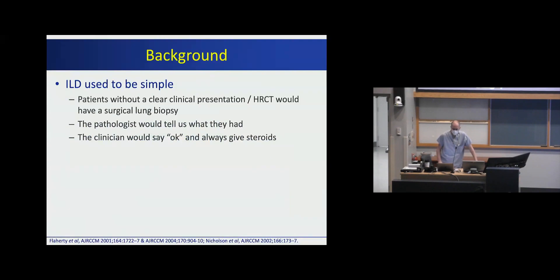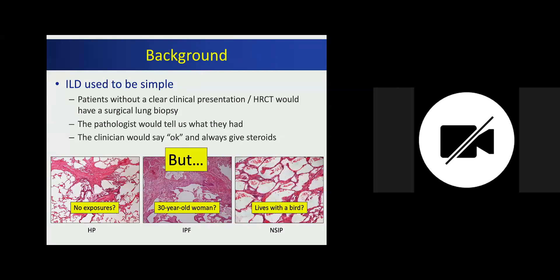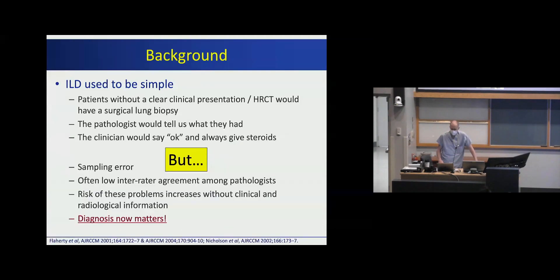As a little bit of background, ILD used to be simple. Patients without a clear presentation or a CT scan would then have a surgical lung biopsy. The pathologist would tell us what they had, and everybody would get steroids all the time. Now we take a much more nuanced approach to ILD management, with complex scenarios like hypersensitivity pneumonitis but with no exposures, a UIP pattern in young women relatively incompatible with IPF, and NSIP patterns seen in many different etiologies. Issues include sampling error, inter-observer disagreement among pathologists, and lack of integrating clinical and radiological data. Now the diagnosis matters because we do have more targeted treatments.